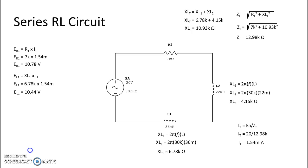I take the ohmic value of L2 multiplied by total current, 4.15k multiplied by 1.54 milliamps and I see a voltage on L2 of 6.39 volts. Now you will notice here that you cannot simply add these values together to get total voltage like you could before.